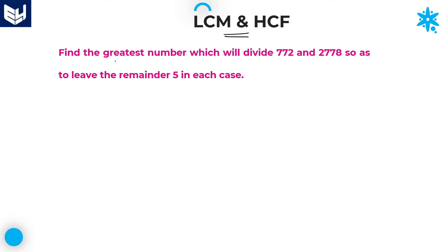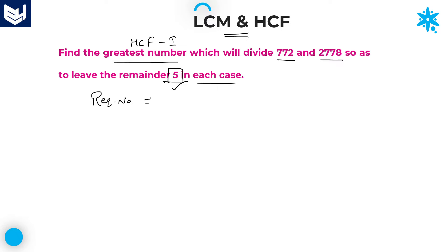The first question in this session is: find the greatest number which will divide 772 and 2778 so as to leave the remainder 5 in each case. This problem belongs to HCF because we are calculating the greatest number, and the remainder is the same in each case. This is the first model — same remainder case. Whenever a problem belongs to HCF first model and the remainder is mentioned, our required number becomes the HCF of the given numbers minus the remainder.